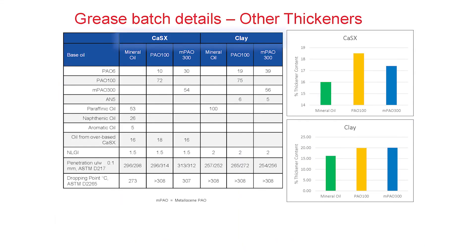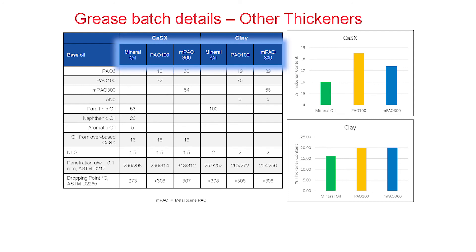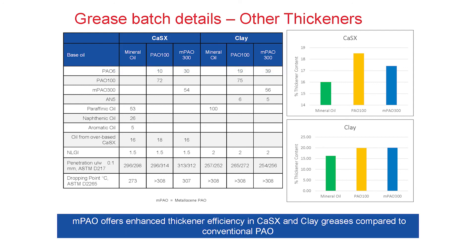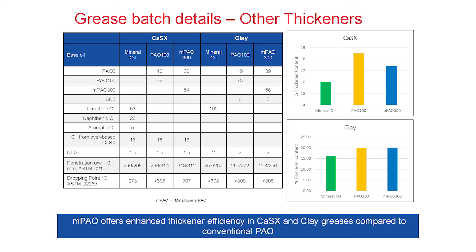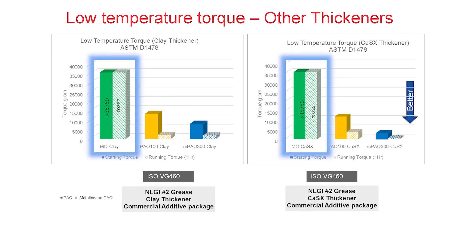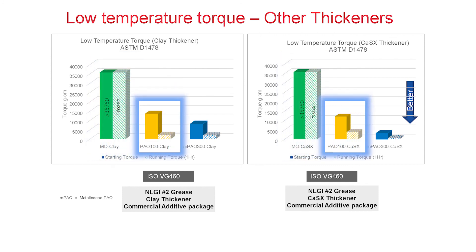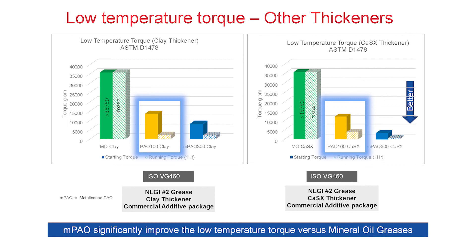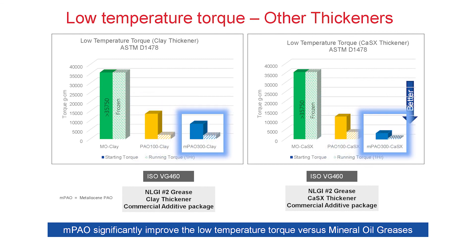To evaluate other thickener systems, such as calcium sulfonate and clay thickeners, we compared mineral oil grease with high-viscosity CPAO and MPAO 300 greases. In most cases, you can see that when changing from mineral oil to synthetics, you need a higher thickener content. But the MPAO formulation allows you to have slightly lower content, which can have economic benefits. We see the same trend with low-temperature properties: the mineral oil has a much higher low-temperature torque and was frozen across the entire test, while CPAO has a significantly lower starting and running torque. By changing to MPAO, you can achieve another step change in low-temperature torque in both the calcium sulfonate and clay greases.